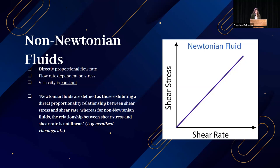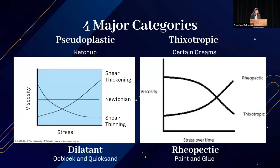Some common examples of non-Newtonian fluids include ketchup, oobleck, nail polish, many paints, whipped cream, peanut butter, and printer ink. There are four main categories of non-Newtonian fluids: shear thinning (pseudoplastic), shear thickening (dilatant), thixotropic, and rheopectic.